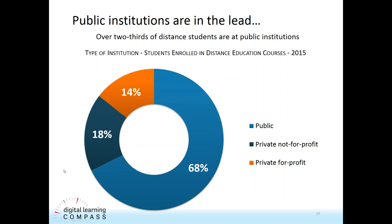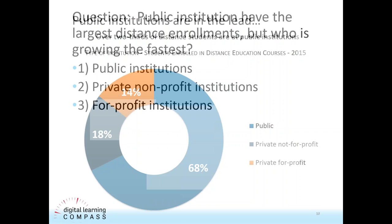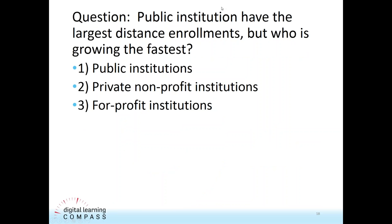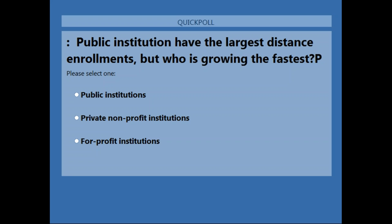So another poll: public institutions are the largest factor, but who's growing fastest — the publics that still maintain their two-year head start, the private non-profits who were lagging behind, or the for-profits who've received the most attention? Votes are rolling in. I would add, while we have this little lag, the fact that the publics are so dominant is something Russ Poulin would like us all to remember — public institutions led in this to begin with and continue to be very strong, supporting the students in their states.